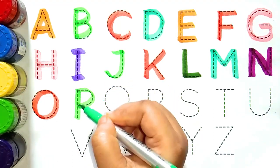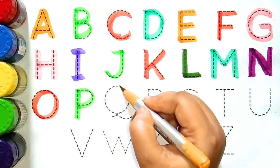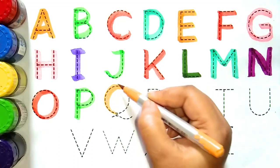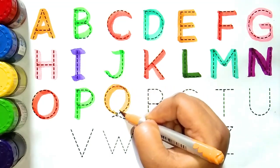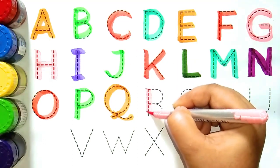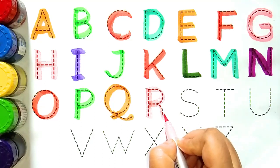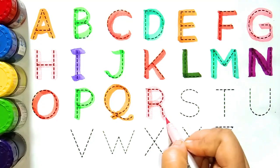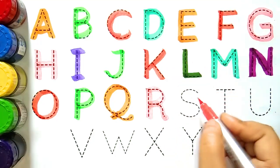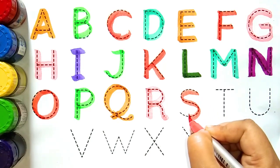O, O for orange. O for kya hota hay bacho, O for hota hay orange. Light green color. P, P for parrot. P for kya hota hay bacho, P for hota hay parrot. Deep yellow color. Q, Q for queen. Q for kya hota hay bacho, Q for hota hay queen. Light pink color.